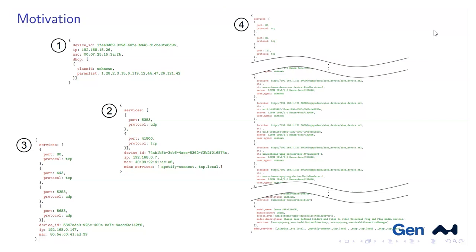We construct a neural network with a structure that resembles the JSONs. Since we know these samples are tree-structured, we can prove some theoretical guarantees. We have extended the universal approximation theorem to the space of all JSONs — so if the JSONs or the classes within the JSONs are statistically distinguishable, we can separate them. We have a proof of this.